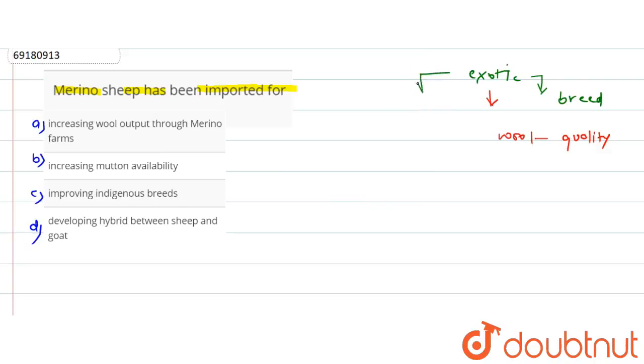I have been asked that Merino sheep, what is the reason to import it? This sheep is mainly imported in the Uttarakhand region. And this is imported for the purpose of cross-breeding to improve the already present indigenous breeds.